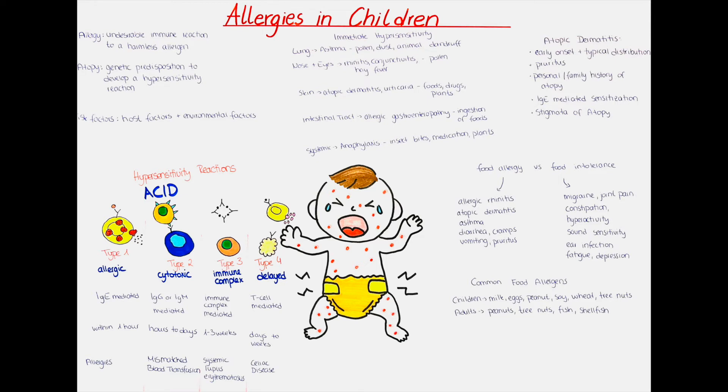Considering the lung, Asthma bronchiale is in this spectrum. It presents with wheezing, dyspnea and tachypnea. The allergen is typically inhaled, and typical allergens are pollen, house dust and animal dander. If you want to know more about asthma in children, we have a separate video on that in our pediatrics playlist.